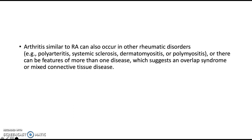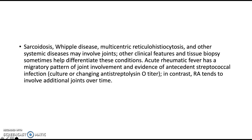Arthritis similar to rheumatoid arthritis can also occur in other rheumatic disorders such as systemic sclerosis, dermatomyositis, or polymyositis, and features of more than one disease may suggest an overlap syndrome or mixed connective tissue disease. Sarcoidosis, Whipple disease, multicentric reticulohistiocytosis, and other systemic diseases may involve joints; other clinical features and tissue biopsy sometimes help differentiate these conditions.